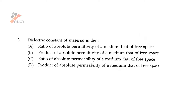Question number two: the dielectric constant of a material is — option a: ratio of absolute permittivity of a medium to that of free space; option b: product of absolute permittivity of a medium to that of free space; option c: ratio of absolute permeability of a medium to that of free space; option d: product of absolute permeability of a medium to that of free space.